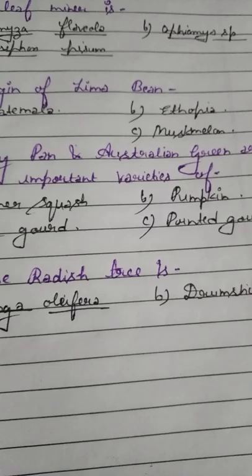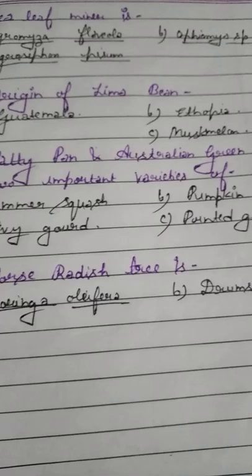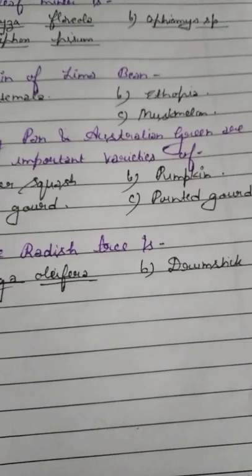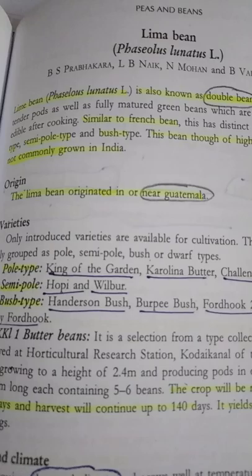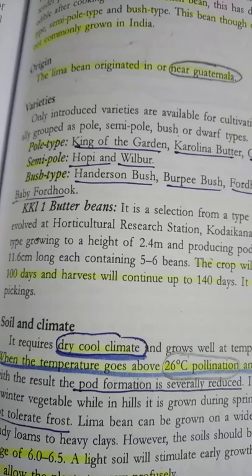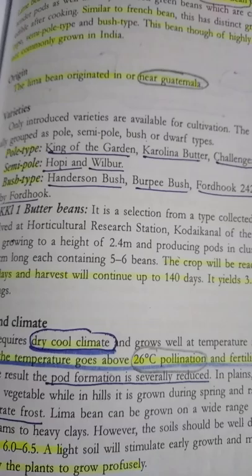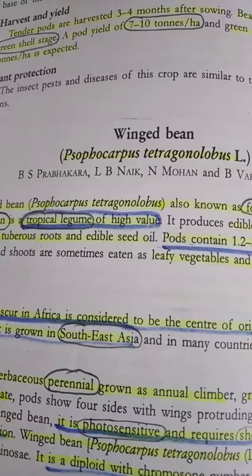Question number 8. Origin of Lima bean: Option A: Guatemala. Option B: Ethiopia. Remember — Ethiopia is the origin of okra, and Guatemala is the origin of Lima bean. Lima bean is Phaseolus lunatus, also called double bean or butter bean. It has varieties like pole bean, semi-pole bean, and bush type. Remember specifically King of the Garden — which is the pole type variety of Lima bean.